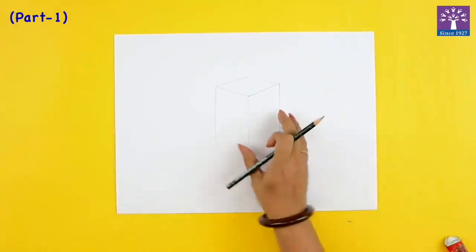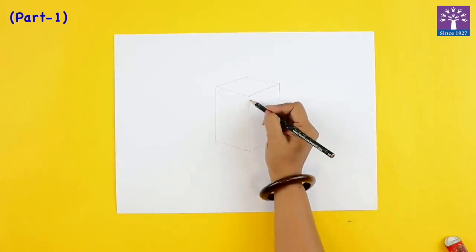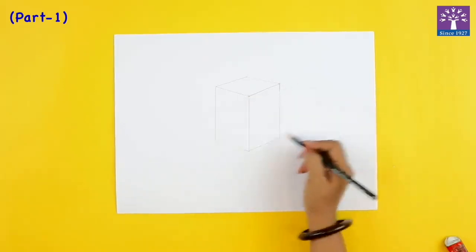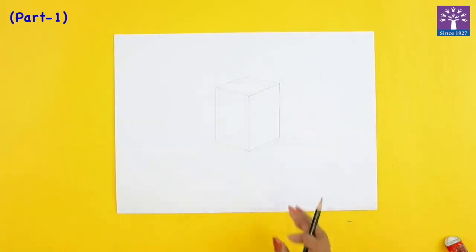So now we have drawn this shape, basically it's a square, it's a cuboid. We started with a center line and then we developed these lines. So now this is looking like a 3D geometrical shape.